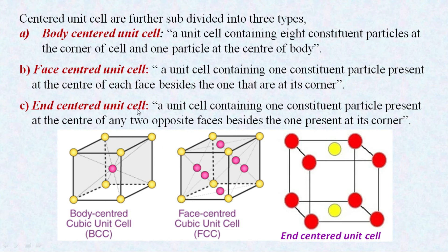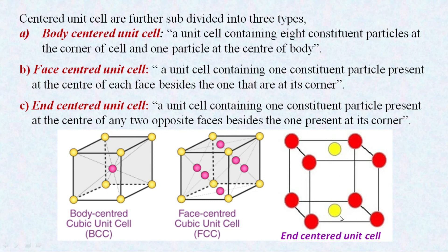The third one is the end-centered unit cell. This end-centered unit cell is a modified version of the face-centered unit cell. In this case, the particles are present at the corners, along with only two face-centered particles which occupy opposite planes. So unlike face-centered cubic where particles are at the center of all faces, here only two face-centered particles are present and these two faces are opposite to one another. As we can observe in this diagram, there are eight red color particles occupying the corners and two face-centered particles lying in opposite directions. That is what we call the end-centered unit cell. Thank you.